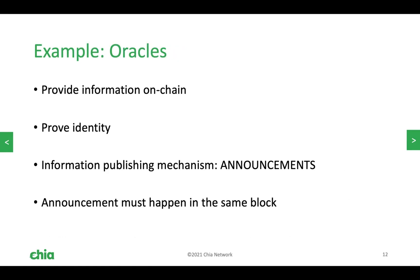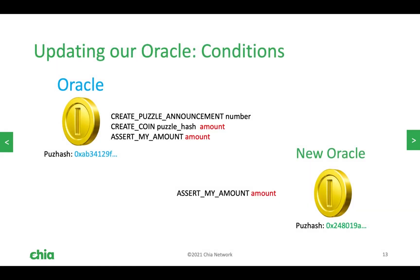The example we're going to use is an oracle. An oracle is a way of bringing real-world information onto the blockchain in a way that we can interface with programmatically. To be a good oracle, you need to bring that information into a format reliably consumed by other transactions, and you need to prove your identity to other agents on the network. We demand cryptographic proof that the same entity controlling the oracle in the past is the same one producing these announcements now.